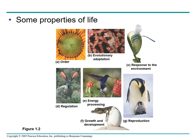The figure on the screen shows seven properties of life: order, evolutionary adaptation, response to environment, regulation, energy processing, growth and development, and reproduction. When I say order, this is a close-up of a sunflower illustrating the highly ordered structure that characterizes life. The next one is evolutionary adaptation. The overall appearance of this pygmy seahorse camouflages the animal in its environment. Such adaptation evolves over countless generations by reproduction success of those individuals with heritable traits best suited to their environment.